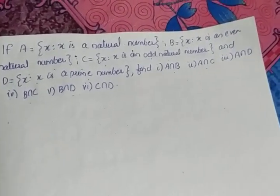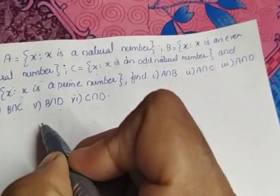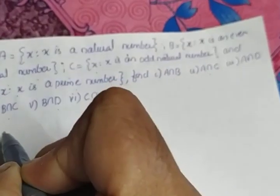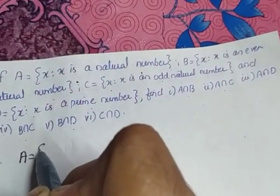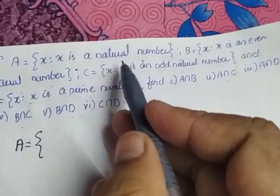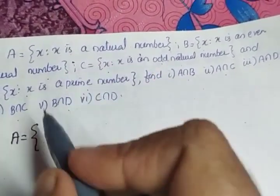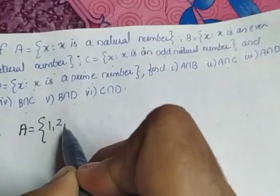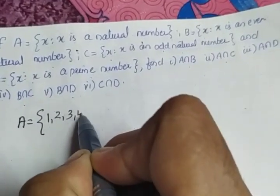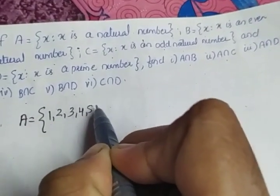All four sets are given in set-builder form. The first thing is to convert them into roster form. A is the set of all natural numbers, which is the set {1, 2, 3, 4, 5, ...}. We need to write only 3 or 4 elements.